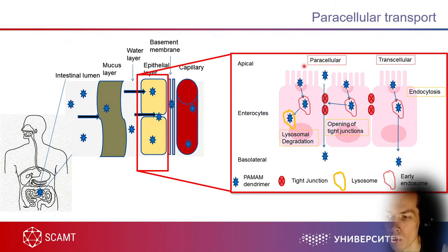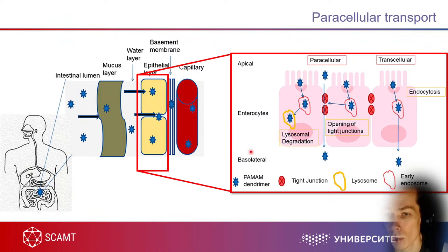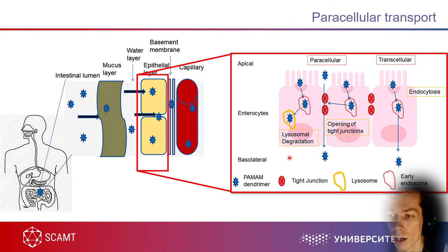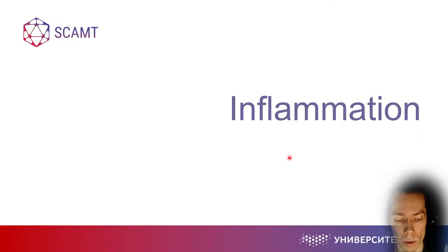Some particles like poly(amido)amines can penetrate tight junctions by disrupting junction proteins. So there are different options for nanoparticles to enter the body. For example, next time you use sunscreen with titanium dioxide particles, remember they can enter the body and accumulate in your liver.